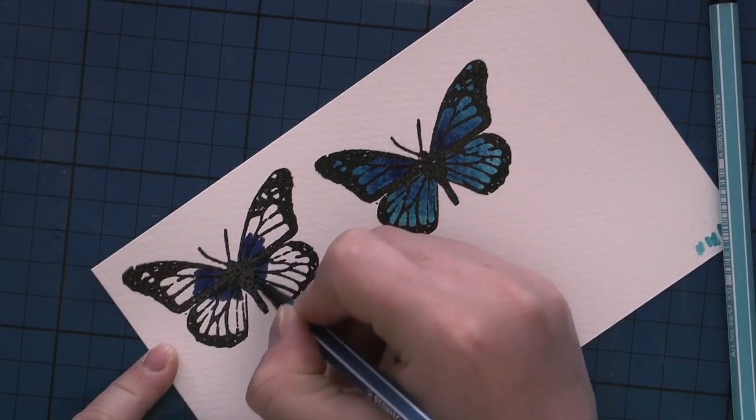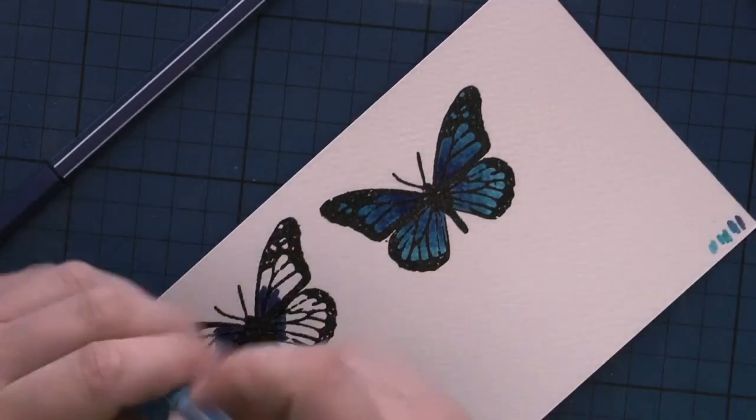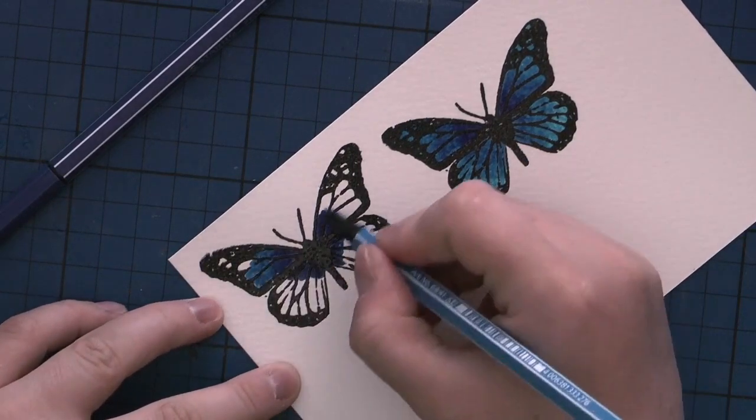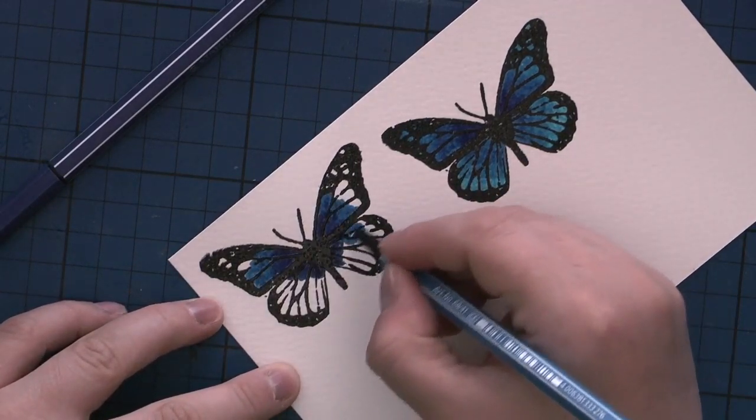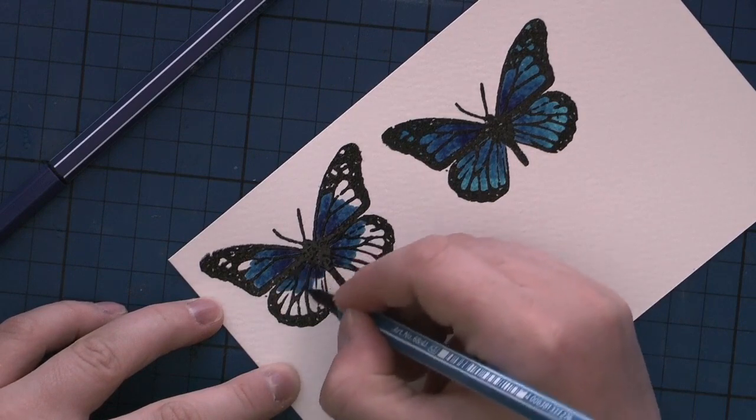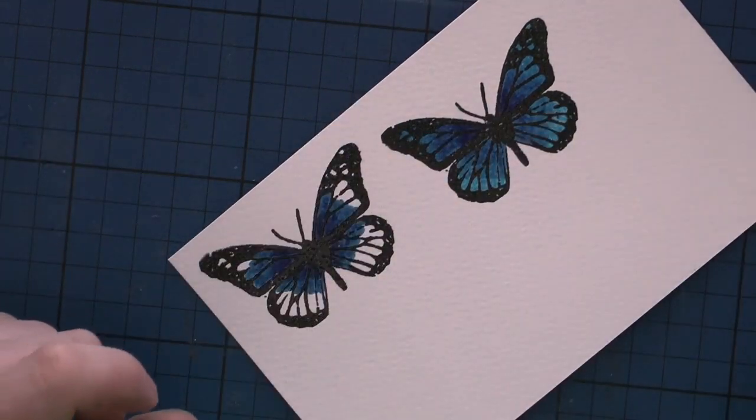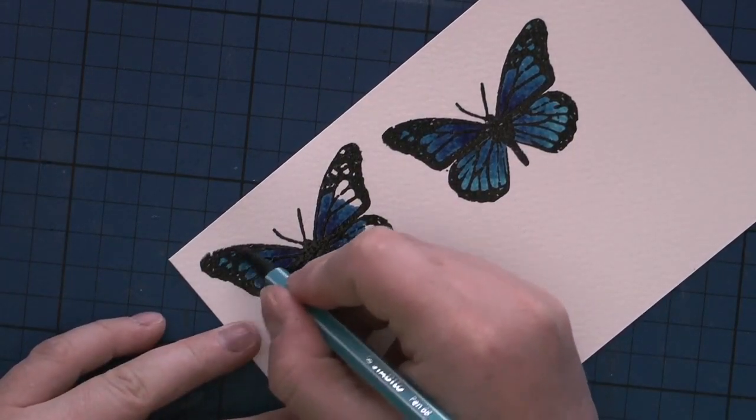Then later, wherever you could see the white cardstock sticking out, I went over the edge with my Memento Tuxedo Black pen to cover it up. For this technique to work even better, it's probably best if you have available dies for any shapes you would like to die cut.